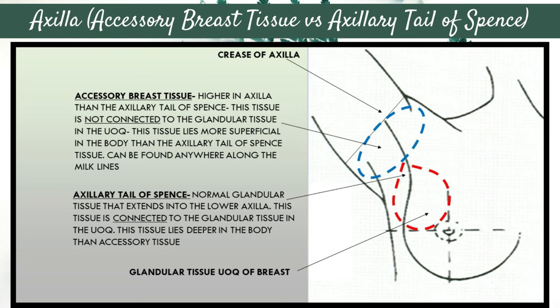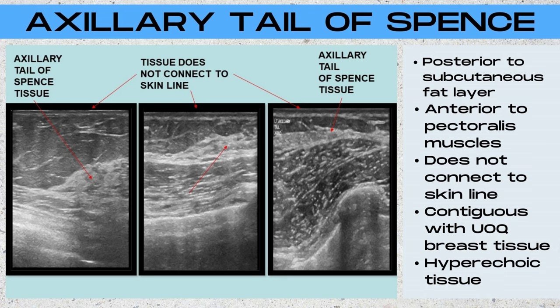Sometimes accessory breast tissue will also have a supernumerary or accessory nipple associated with it. Here are three ultrasound images demonstrating the ultrasound appearance of the axillary tail of Spence. You'll note that this white hyperechoic glandular tissue patch is located posterior to the subcutaneous fat layer, anterior to the pectoralis muscles, does not connect to the skin line, and is contiguous with the upper outer quadrant breast tissue.